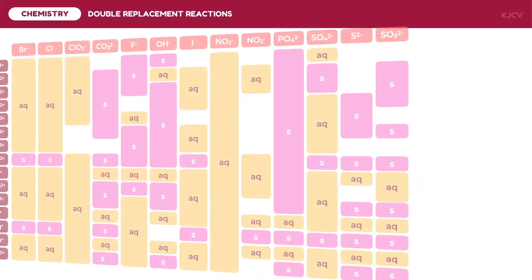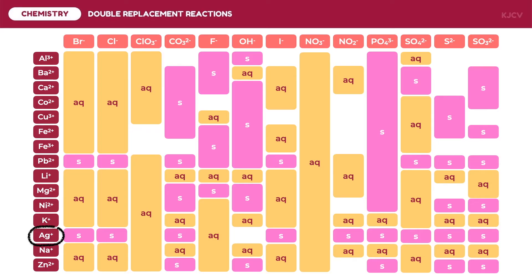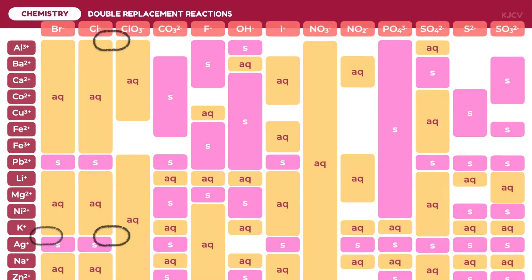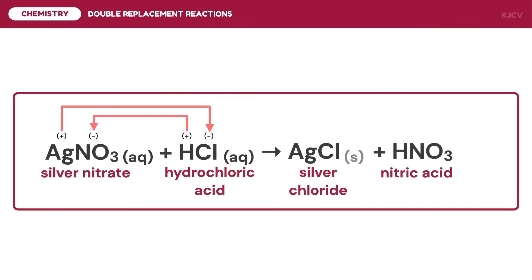Let's look at our solubility table to determine if silver chloride will form a solid. In silver chloride, silver is the cation and chloride is the anion. The intersection of these ions shows that it will form a solid. Therefore, we write (s) as a subscript of silver chloride and (aq) as a subscript of nitric acid. Since the equation is already balanced, our complete reaction is: one mole of silver nitrate reacts with one mole of hydrochloric acid to form one mole of silver chloride and one mole of nitric acid.